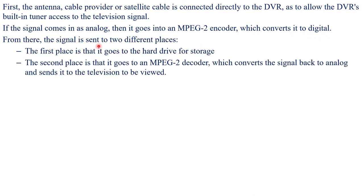From there the signal is sent to two different places. First, it goes to the hard drive for storage, and second, it goes to the MPEG-2 decoder which converts the signal back to analog and sends it to the television to be viewed.